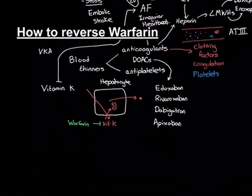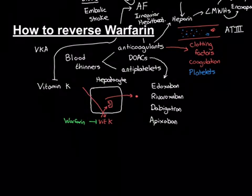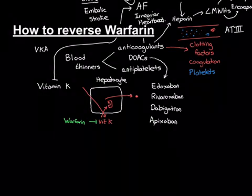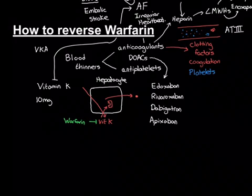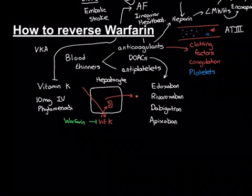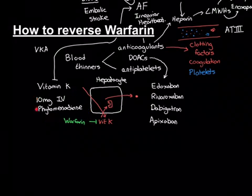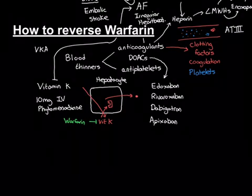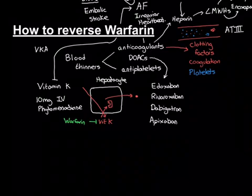If someone is on warfarin for atrial fibrillation and they now need emergency surgery — for example they've broken their hip — we reverse the warfarin so we can do the operation, because operating whilst on warfarin could cause dangerous bleeding. We reverse warfarin by giving intravenous vitamin K: 10mg of intravenous phytomenadione. It works incredibly quickly — usually within 10 hours the effect of warfarin has been completely reversed, as the hepatocytes synthesise new clotting factors.